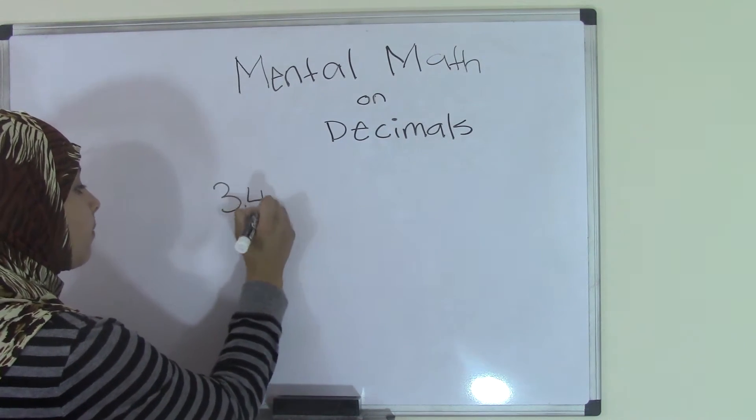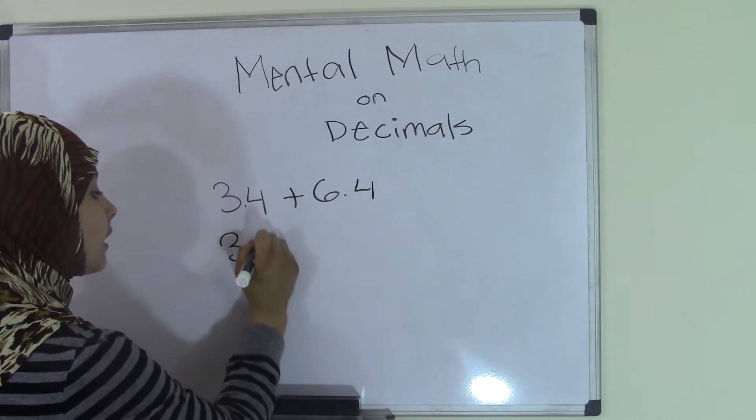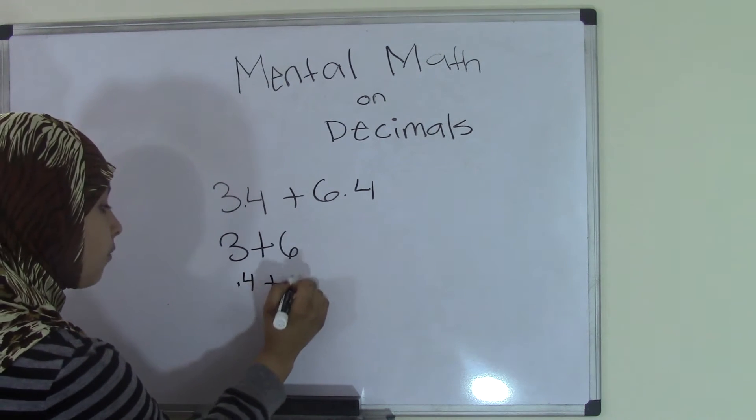3.4 plus 6.4. We know that 3 and 6 are whole numbers, and then we have 0.4 plus 0.4.